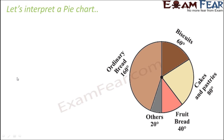Once you have a pie chart in place, what do you understand? What do you infer out of that pie chart? Here in this pie chart, you can see that there are different sections for biscuits, cakes and pastries, fruit, bread, ordinary bread and others. This pie chart shows the sale of different items in a bakery shop.